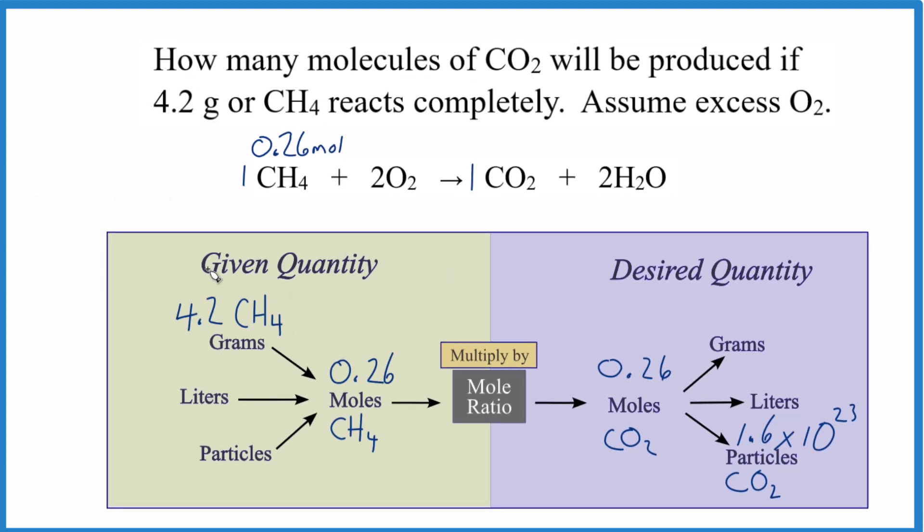So we've already converted our grams to moles. We're right here. We're going to use the mole ratio. And we can use the ratio like this: 0.26 is to 1 as X is to 1. And if you cross multiply, you have 1 times X, that's X, and that equals 1 times 0.26, 0.26. That's what we found before. Then we could multiply by 6.02 times 10 to the 23rd, that's Avogadro's number. That would give us particles. That's another way to do it. It's a good way to check your work.